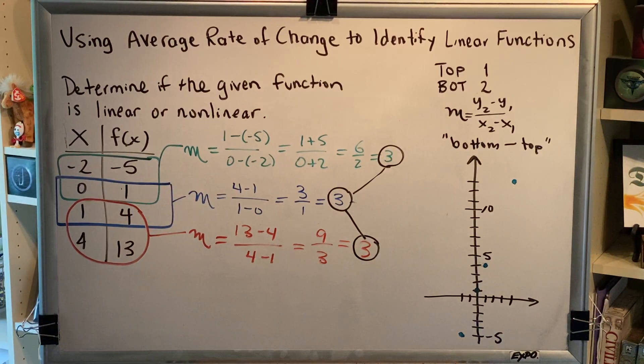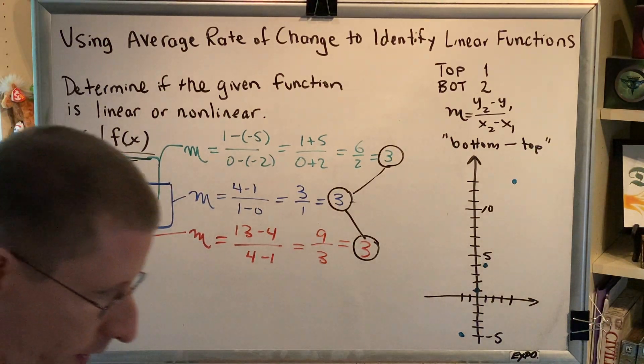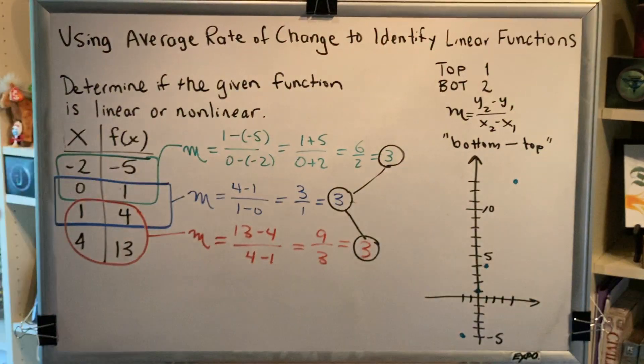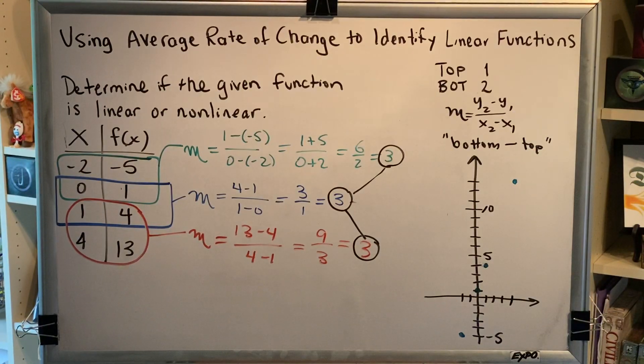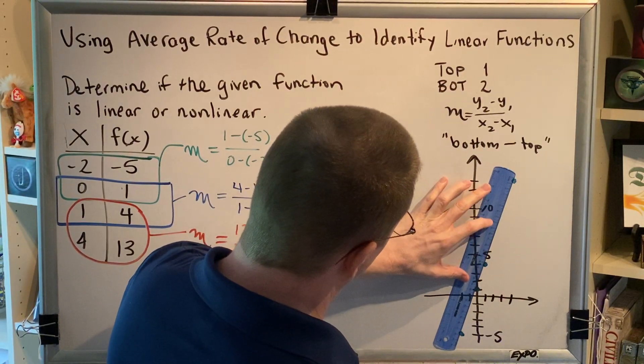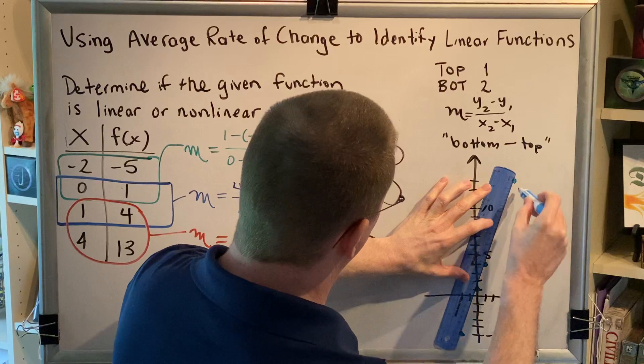So then the question is, do these points form a straight line? If you can draw a straight line that goes right through the center of all of these points, then that is a visual proof that this is indeed a linear function.